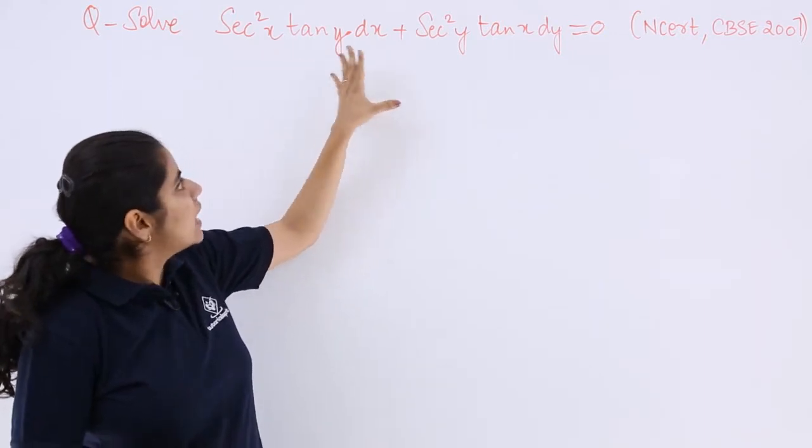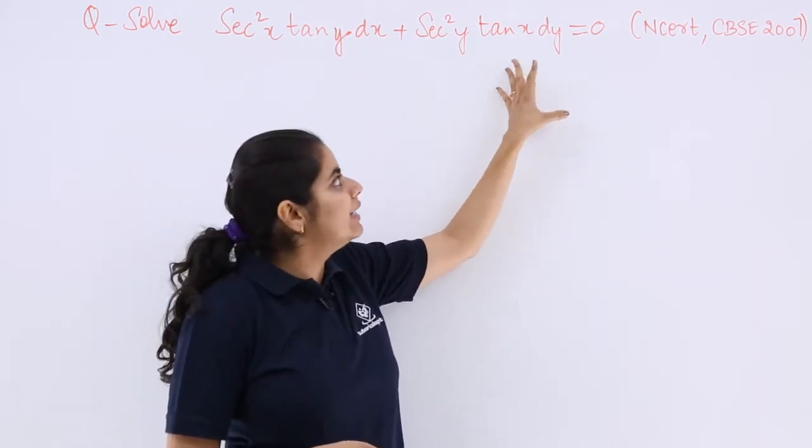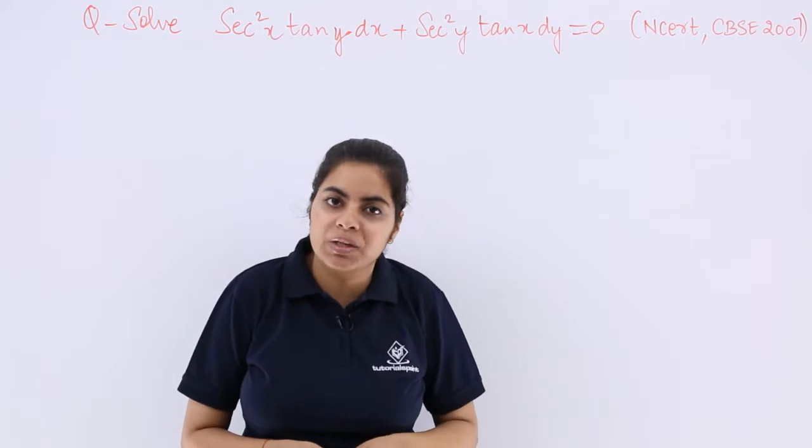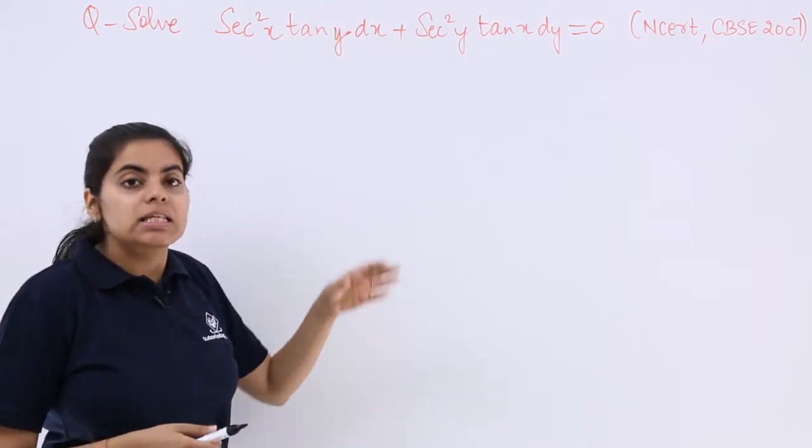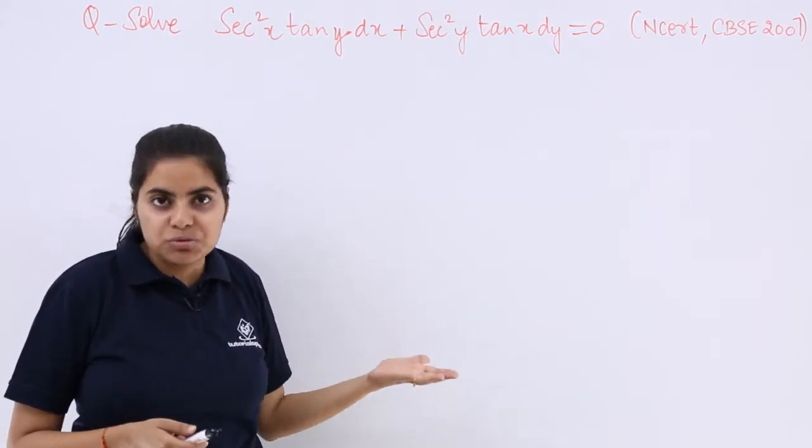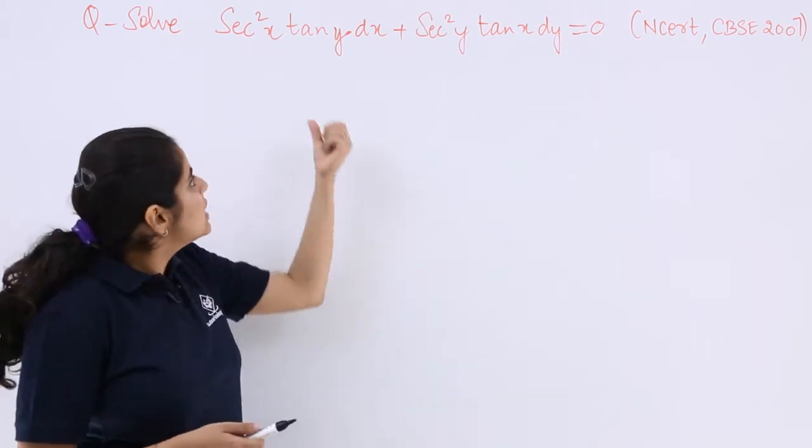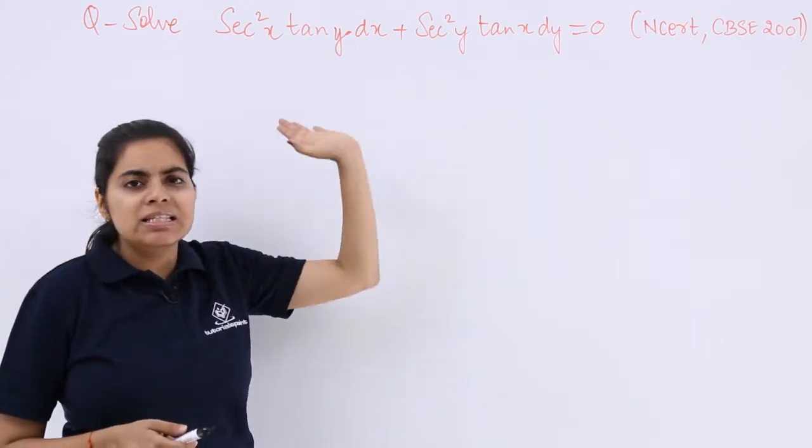It says solve sec²x tan y dx + sec²y tan x dy = 0. Now as you see, it says solve, that means we have to give a solution for the same. The other thing, it has dx dy in a separate form.